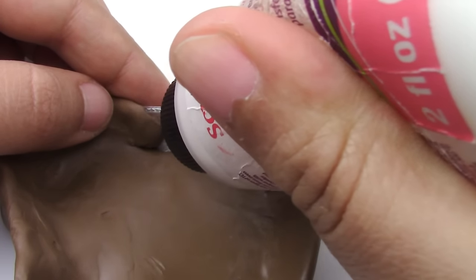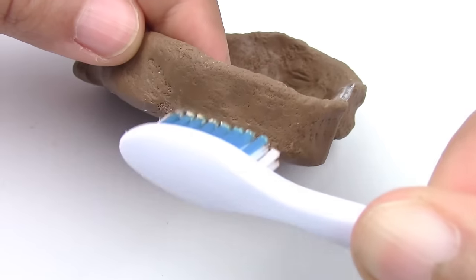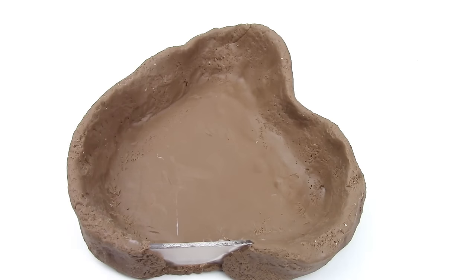Now you're going to texture the enclosure with an old toothbrush that's only for your crafting. Make sure you don't use it for anything else. So far so good.